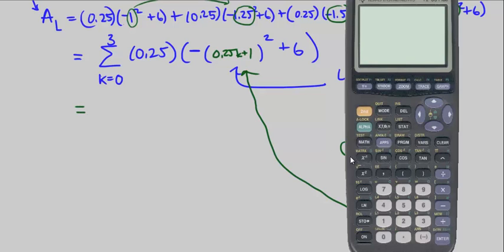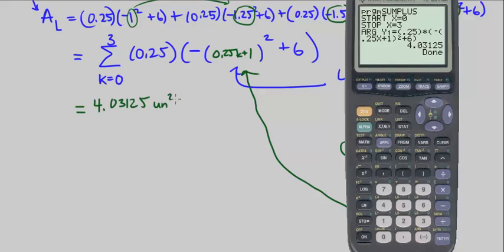Let's go ahead and plug it into our calculators. Program some plus. We're starting at 0, stopping at 3. Make sure you put all the parentheses in the argument, so 0.25 times negative, and open parentheses, 0.25x plus 1, close parentheses, square, plus 6, close parentheses. That's equal to 4.03125 units squared. And remember, this is our upper bound area.